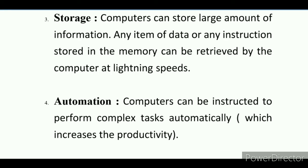Number two: Accuracy. Number three: Storage. Computers can store large amounts of information. Any item of data or any instructions stored in the memory can be retrieved at lightning speed. Just as fast as its calculations are, a computer can also store our data very quickly. When we click the save button, at that very moment the data gets stored in the computer.